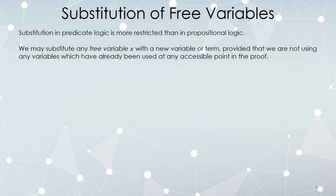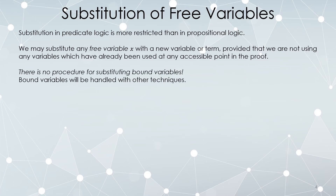So if the variable y appears anywhere at all in your proof, in a line that you can still refer to, you cannot use it in a substitution. Anytime you substitute something in, it's got to be made out of totally new variables. And that's only for free variables. If you have a bound variable, you cannot substitute for it at all — there are other techniques for handling bound variables in two-column proofs. Substitution is only for free variables, and you have to use entirely new terms.